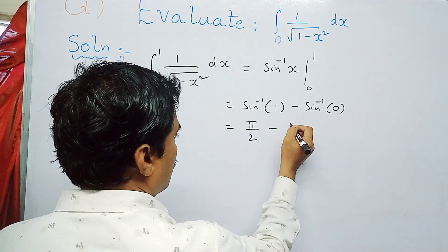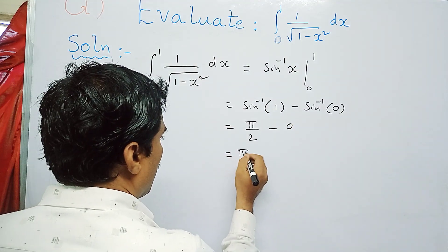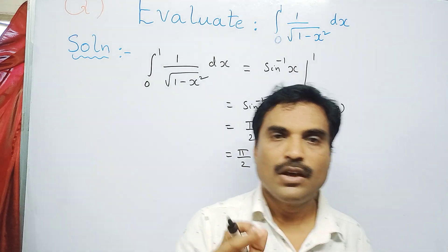When will sine be 0? That is at 0 degrees, where sine will be 0. So this is nothing but pi by 2 minus 0. So pi by 2 is the final solution for the above problem.